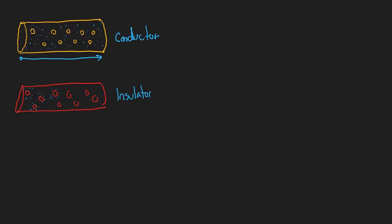The classic example of conductors are metals, and the classic example of insulators would be wood or rubber. There are some other types used industrially, but those are two examples to be aware of. Conductors include metals like copper or gold — most metals are very great conductors. Insulators include wood and rubber.